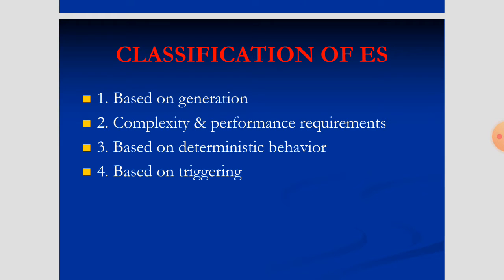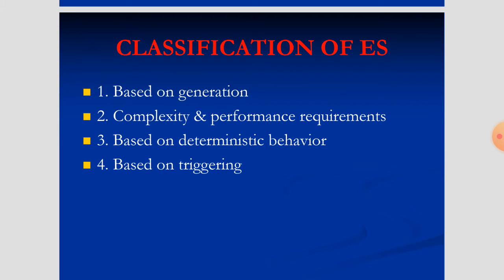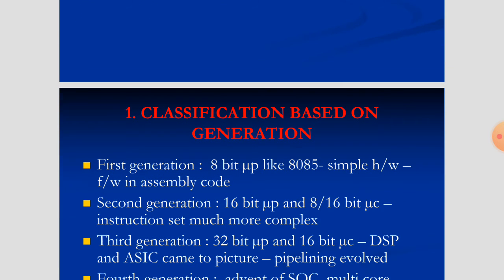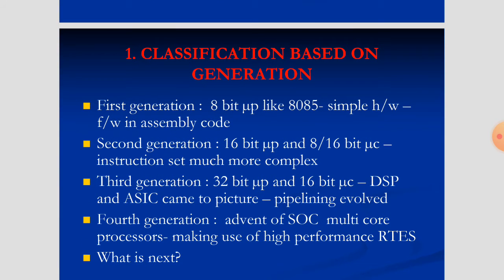Next, the classifications of embedded systems. Here, you are going to classify embedded systems based on different parameters. There are four parameters, and you have to concentrate more on the first and second: classification based on generations, and classification based on complexity and performance requirements.